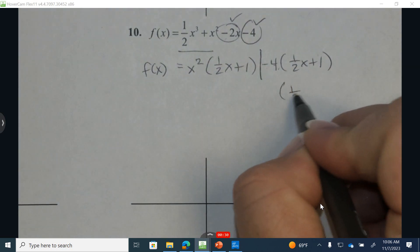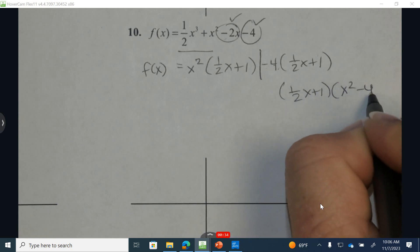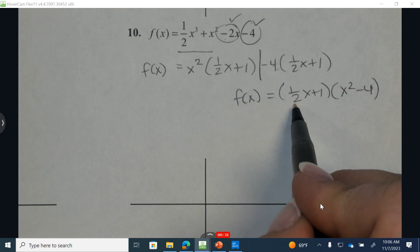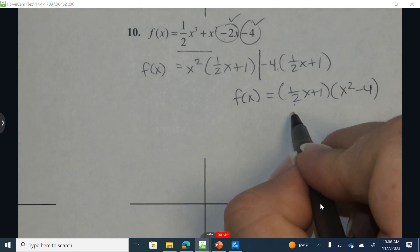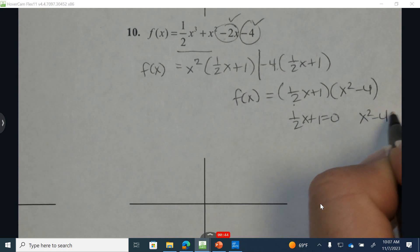Both groups contain the quantity 1 half x plus 1 in front of the first group, in front of the second group. And now these two factors, I'm going to set equal to 0 to help find and identify the x-intercepts. 1 half x plus 1 equals 0, and x squared minus 4 equals 0.